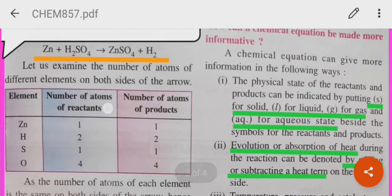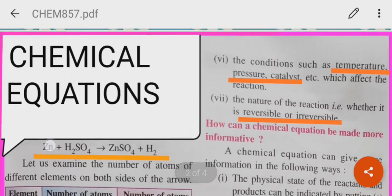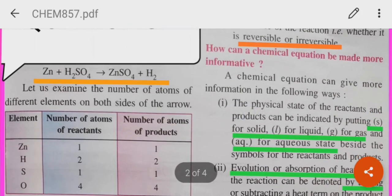Now, let us see this chemical equation. One atom of zinc reacts with one molecule of sulfuric acid to give one molecule of zinc sulfate and one molecule of hydrogen. If we see the number of atoms of reactants and the number of atoms of products on either side, we see that the equation is balanced.